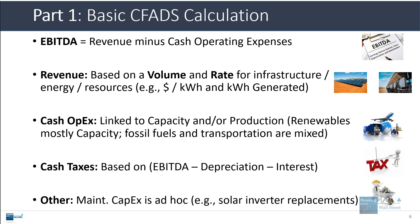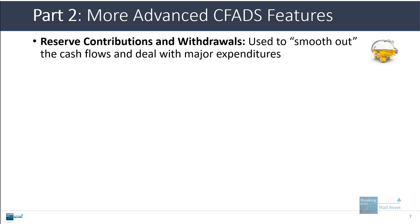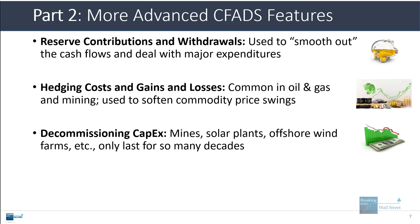More advanced features include reserve contributions and withdrawals, which smooth out cash flows and deal with major expenditures. You could have hedging costs and gains and losses in sectors like oil and gas and mining, used to smooth out swings in commodity prices.